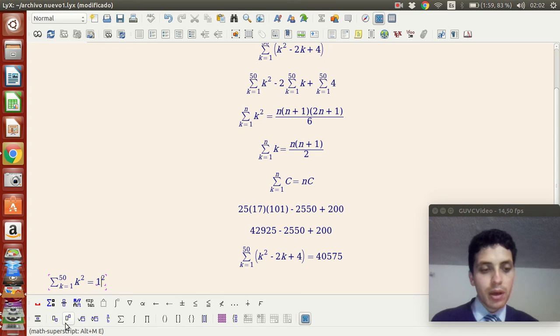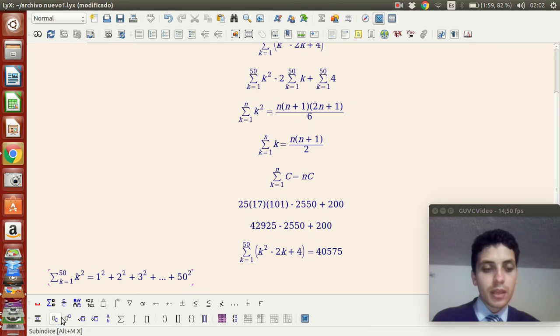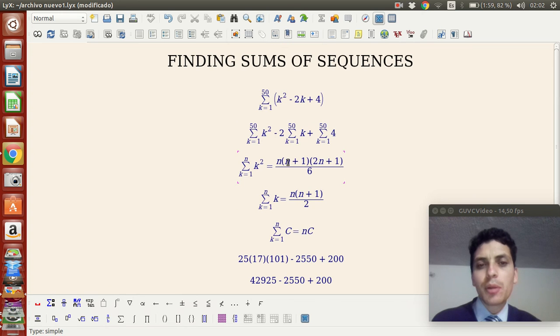This sum is from k equals 1, so 1 to the second power, 2 to the second power, 3 to the second power, plus...until you get to 50, the last term, to the second power. This is a sum, and when you understand this, it's easy to remember the properties because sum is commutative and associative. I can factor things.